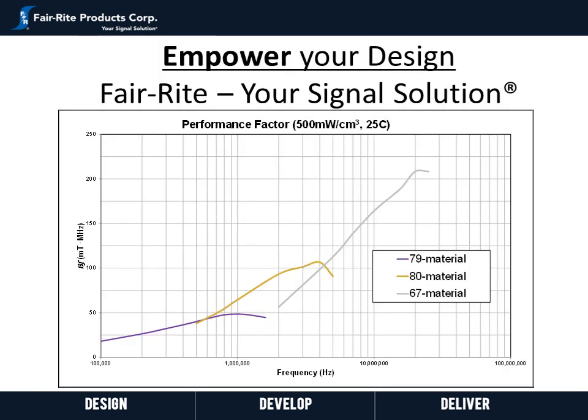This last graph is plotting the performance factor for 79, 80, and 67 material. As can be seen, 79 dominates on performance factor up to 500 kilohertz or so, then 80 material up to over 4 megahertz, and 67 material for the higher frequencies above 4 or 5 megahertz. So with existing Ferrite 67 and 79 materials and newly developed 80 material, Ferrite now offers materials to support the full range of frequencies for silicon, silicon carbide, and GaN technologies.